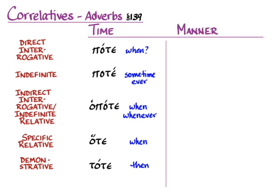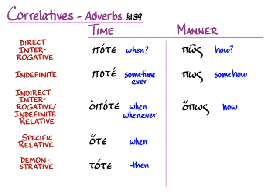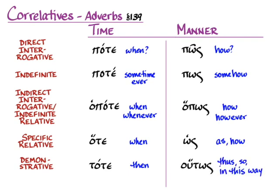Let's see how much of this pattern shows up with adverbs about manner. We get pos to ask the question 'how?' — that's the pi version with accent. The enclitic version, still with pi but without that accent, is the indefinite 'somehow.' For the indirect interrogative — 'she asks how they pass a law' — we get hopos. Remember to consider other possibilities when you see hopos, as it's the same as the conjunction. It can also be used as an indefinite relative meaning 'however.' The specific relative is hos, meaning 'as' or 'how.' And the demonstrative is houtos, meaning 'thus,' 'so,' or 'in this way.'